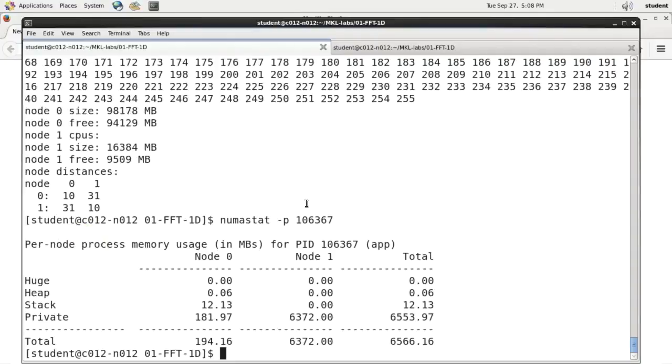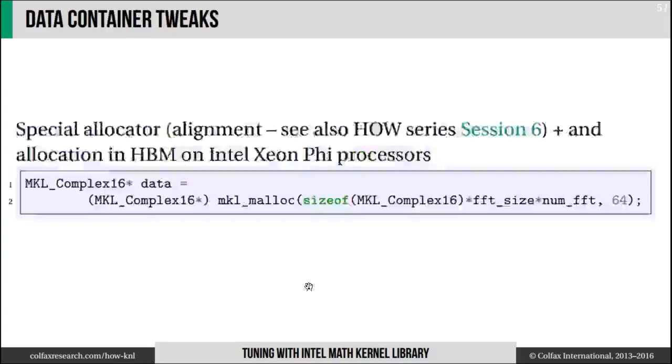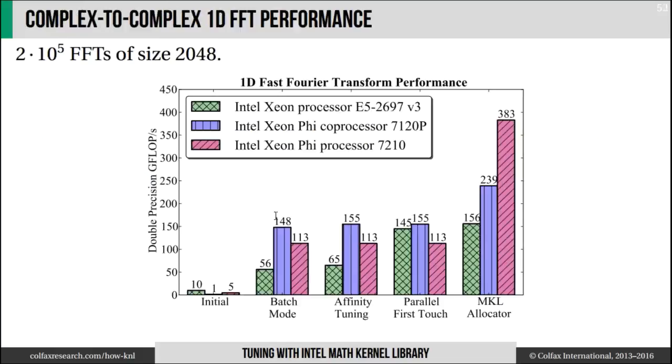I summarized my performance measurements, including the one with the modified allocator, in this plot. And I'm showing the red bars for the same system that I've just experimented with. And this was my initial code, then I show the result for the batch mode and the result with improved allocator.